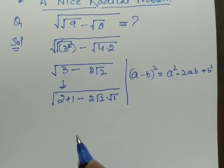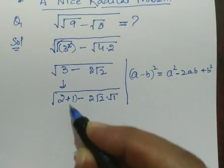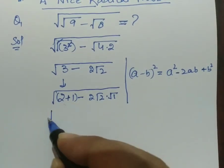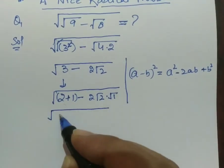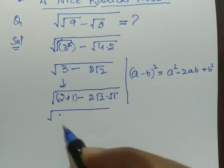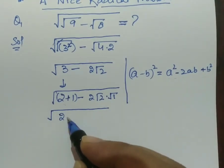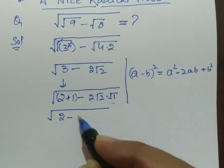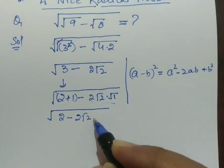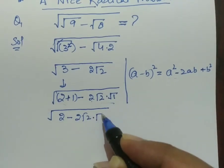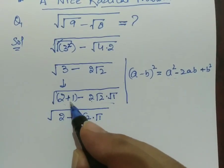Now let's arrange in order. So after arranging in order, we can write it here: 2 minus this term 2 root 2 and square root of 1, and this plus 1 can be written here.